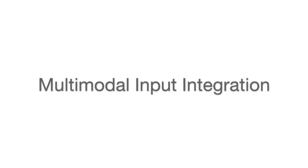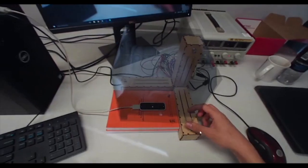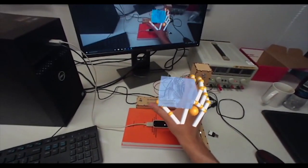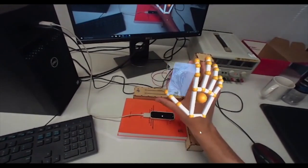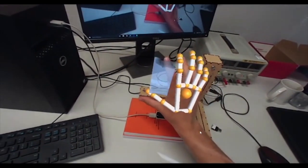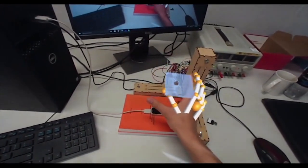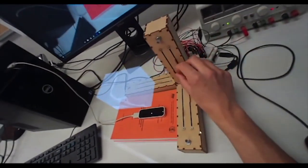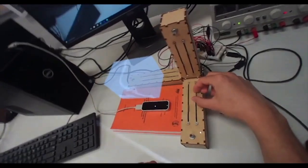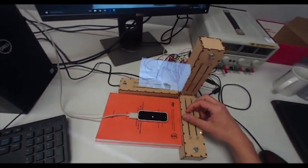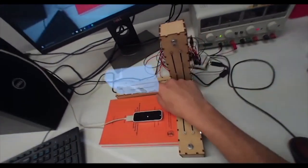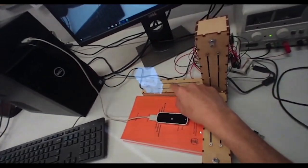We also explored integrating the Embodied Axes with several input modalities. Here we illustrate the natural hand tracking integration with the Leap Motion Controller. With this configuration, the user can use a rubber band interaction between their tracked fingers to select a volume. The actuated sliders reflect the volume and can be used to fine-tune the selection along the axes.